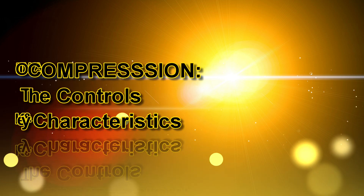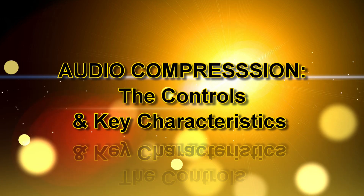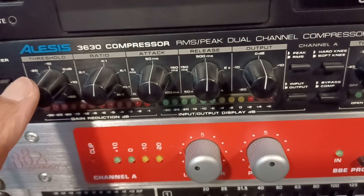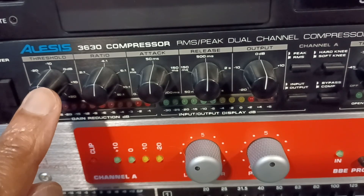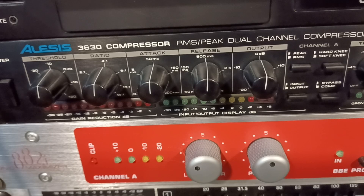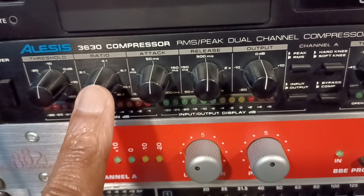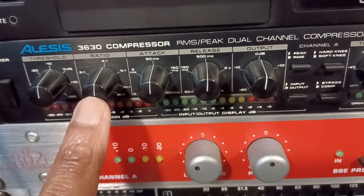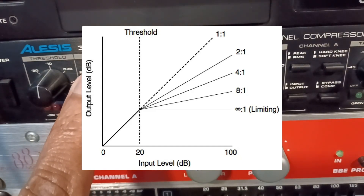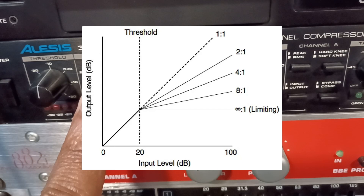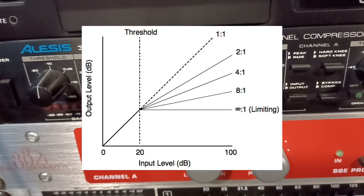Now let's move on to the key characteristics of dynamic range audio compression. The first is the threshold — the level at which the compressor starts working. Any audio above this level will be compressed. Next is the ratio, which determines how much the audio is compressed once it exceeds the threshold. For instance, a 4:1 ratio means that for every four decibels above the threshold, the output increases by only one decibel. A higher ratio means stronger compression.